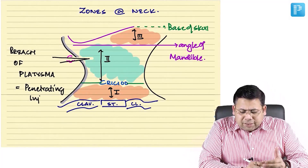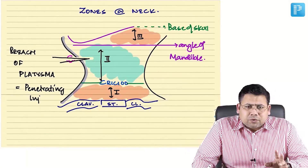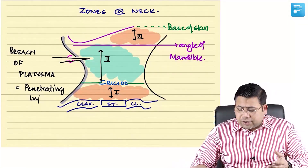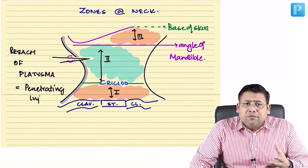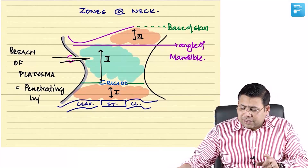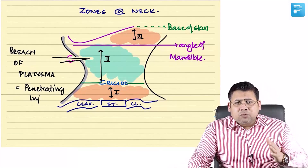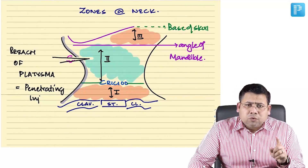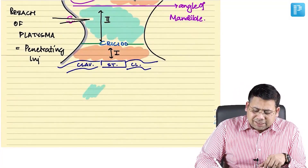Whenever there is injury to the neck, three structures come to mind: the trachea, the esophagus, and the vascular structures. Injury to the trachea or esophagus — the patient may survive 6 to 12 hours. But injury to vascular structures will compromise life immediately. It is very important to rule out vascular injury.